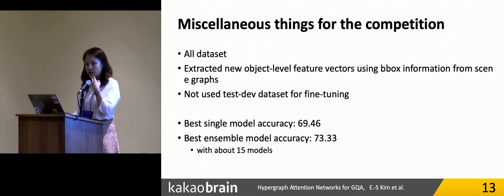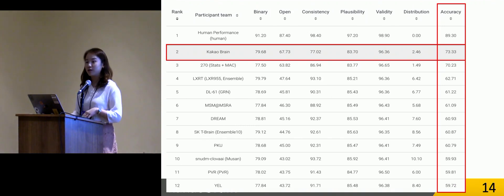These are some minor things which we used for the GQA competition. We trained all datasets, not just using balanced dataset. We extracted new object level feature vectors using bounding box information from scene graphs, and we did not use the test dataset for fine-tuning. During the competition, we achieved the best single model accuracy at 69.46%, and with 15 model ensemble, we achieved 73.73%. We submitted the result to the competition.